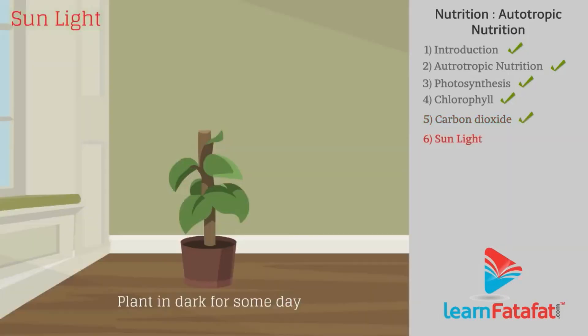Sunlight is also essential for photosynthesis. For example, if we keep a plant in the dark for some days, then there will be no starch production.